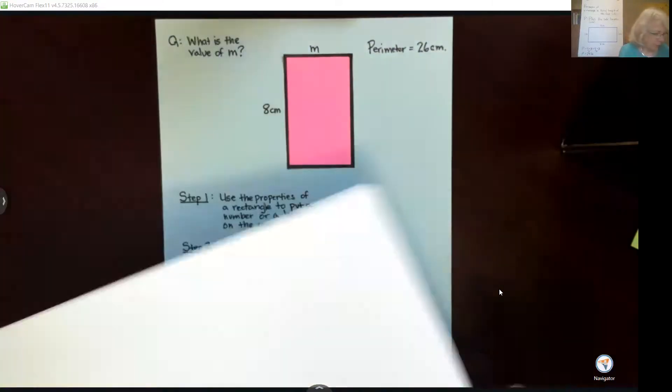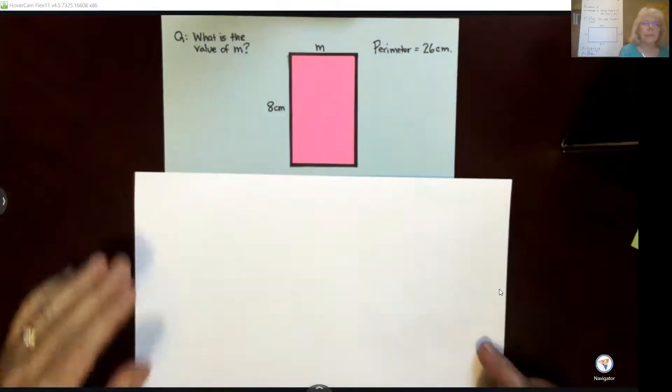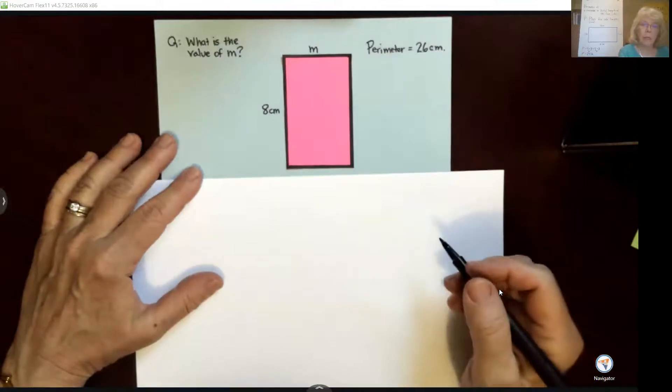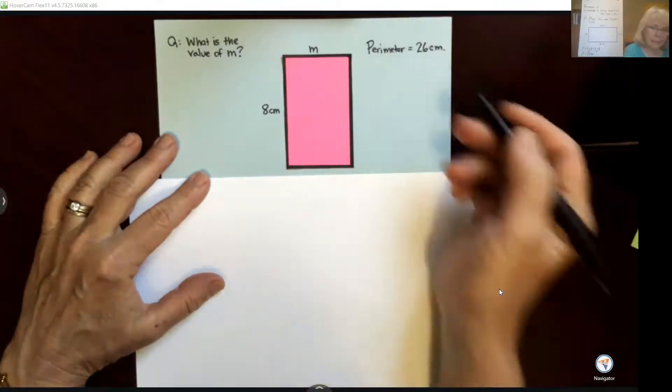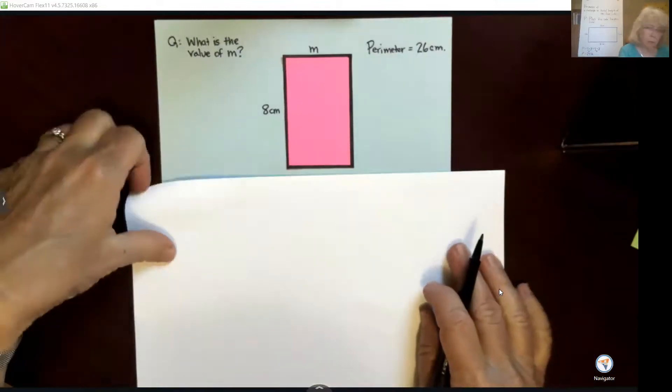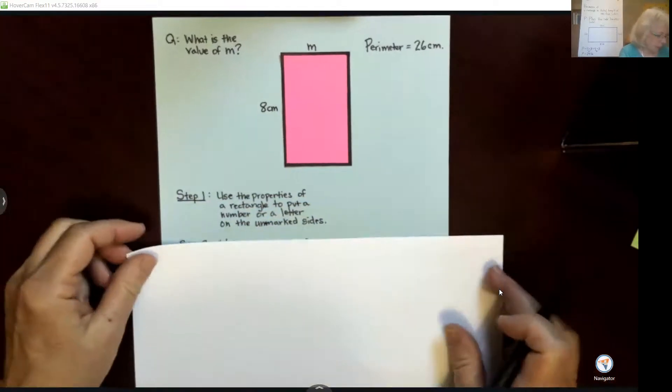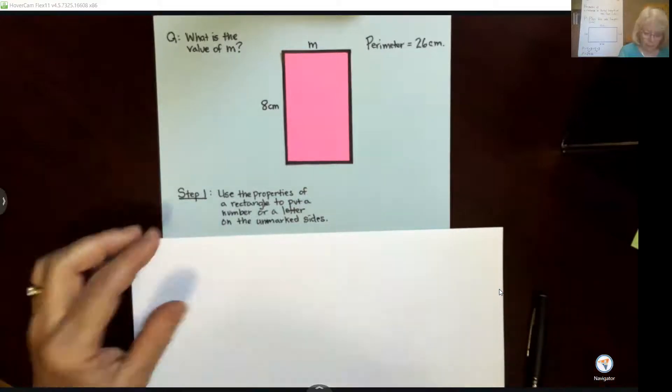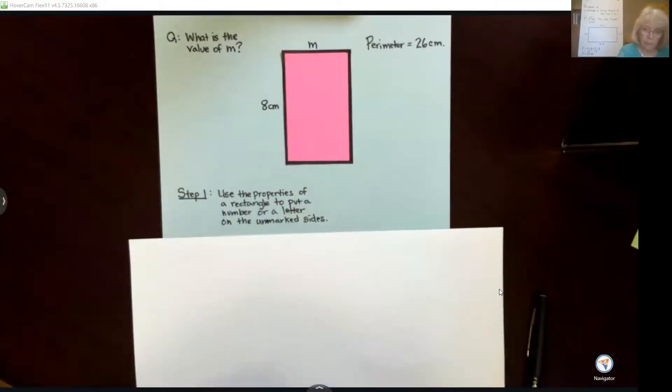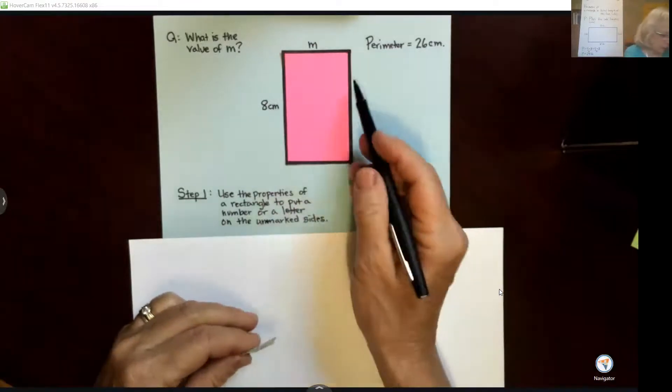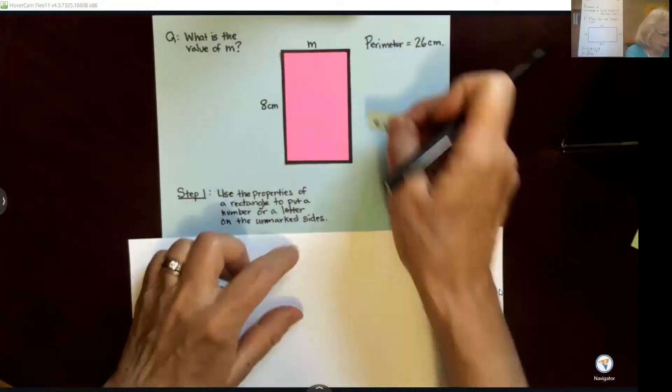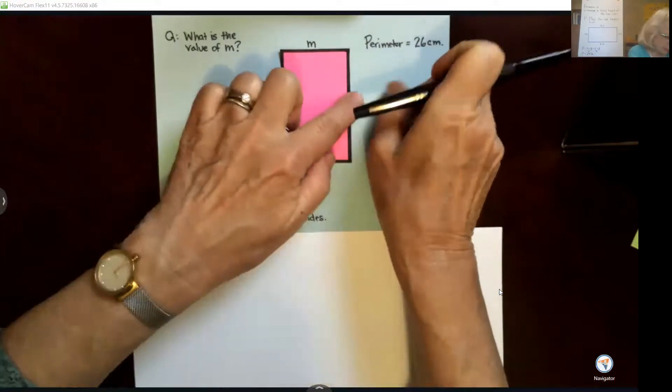Okay, let's go on to this one. Okay, here we have 8 centimeters and m, which is a mystery number, an unknown, and a perimeter of 26 centimeters. So let's take a look at our first step. We're going to use the properties of rectangle to put a number or a letter on the unmarked sides. So if we know the left side is 8 centimeters, what do we know the length of the right side? Say it out loud. That's right, 8 centimeters. I'm going to put that there.